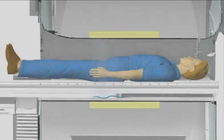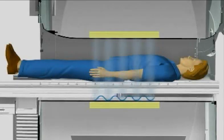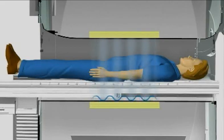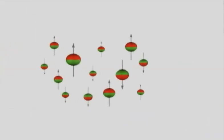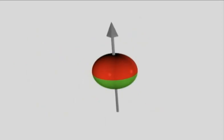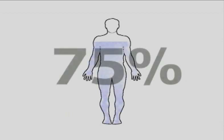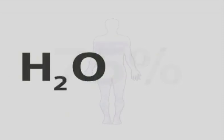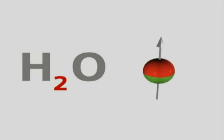MRI, on the other hand, works differently. MRI uses a magnetic field to orient the position of certain nuclei in the body. The primary nuclei used for MRI imaging is in the hydrogen atom, called a proton. As you know, the body is made up of approximately 75% water. Water is two parts hydrogen, making the nucleus of the hydrogen atom — the proton — the most abundant in the human body.